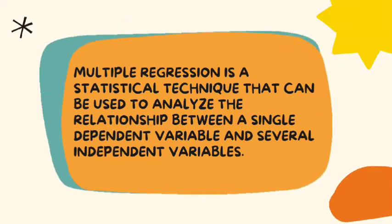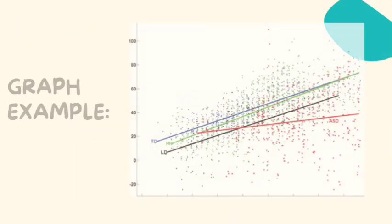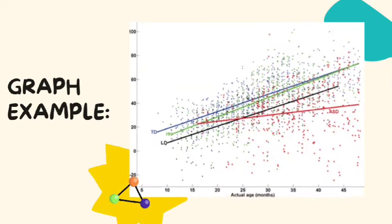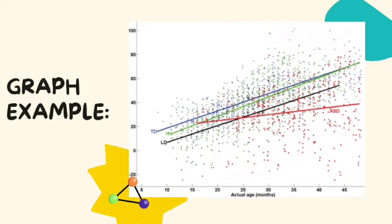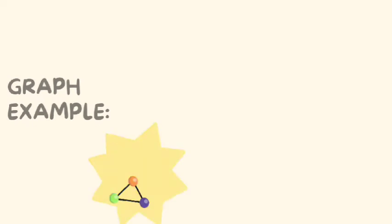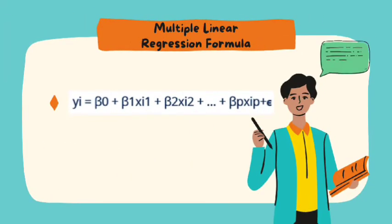Next is graph example: multiple linear regression model prediction for individual observation. The horizontal line is the actual age and the vertical line is predicted total development age.